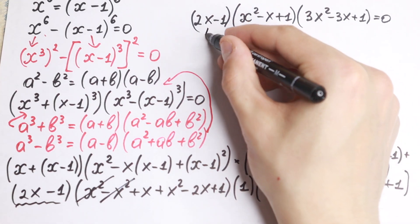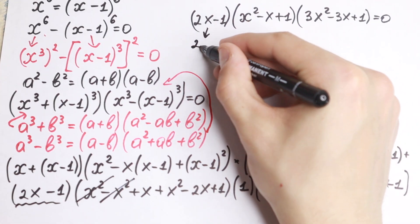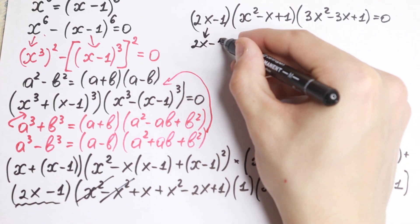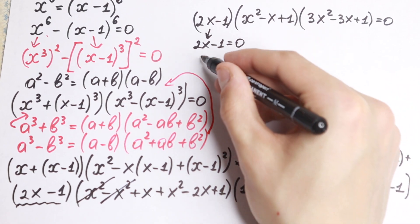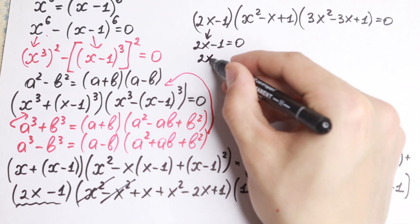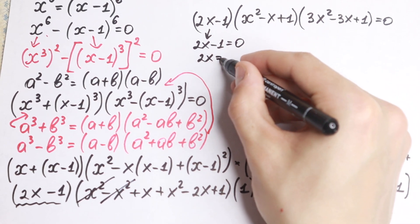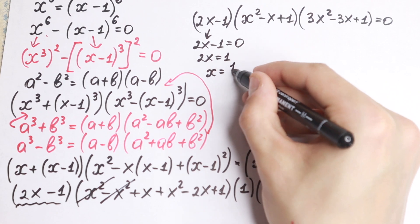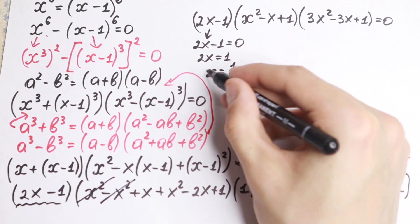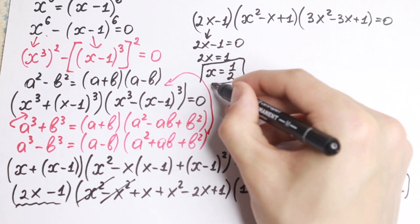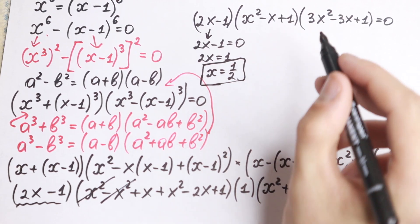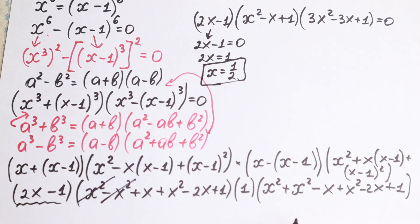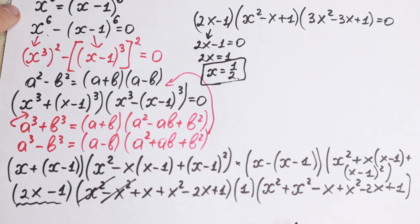So we need to solve each factor equal to zero. From 2x minus 1 equals zero, we get 2x equals 1, so x equals one half. This is our first root.